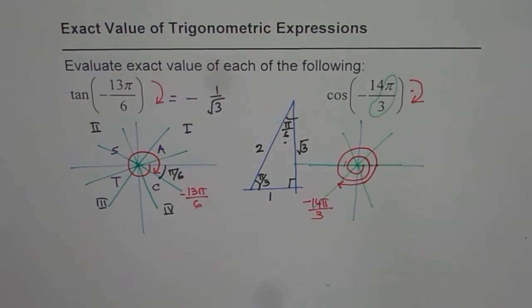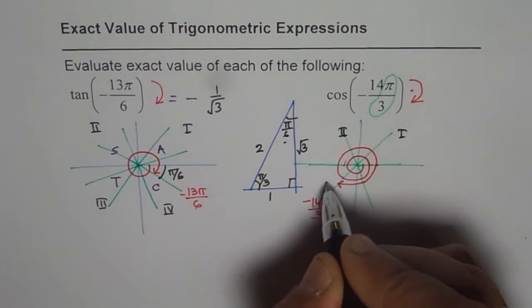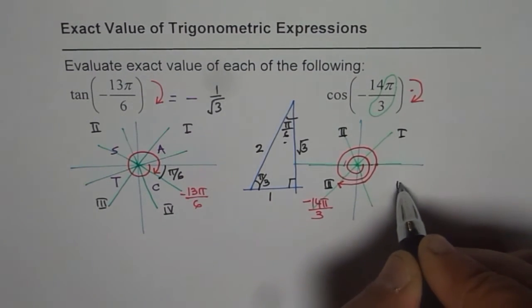So ultimately, you land up in quadrant 3. Quadrant 1, quadrant 2, quadrant 3, this is quadrant 4.